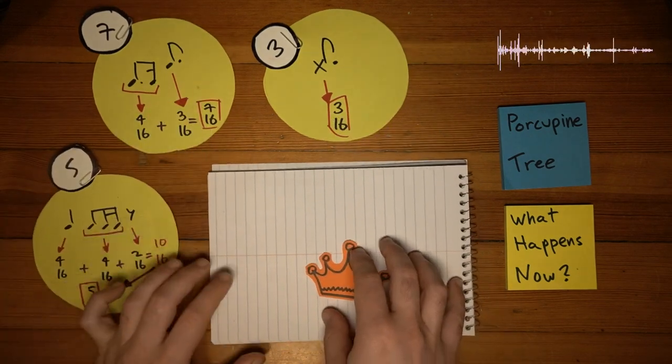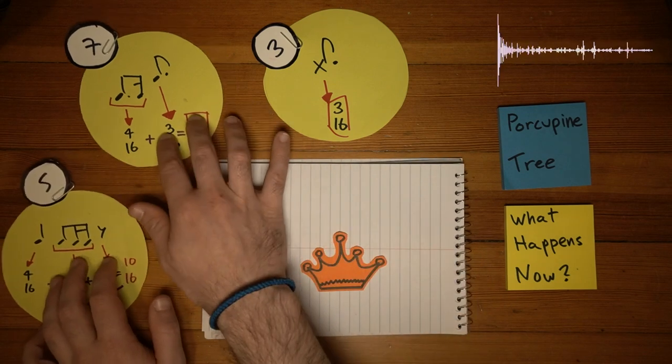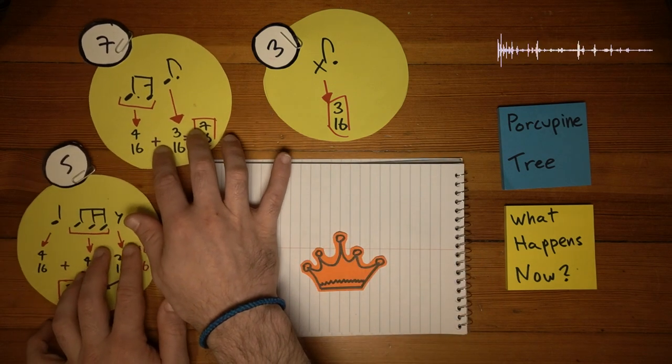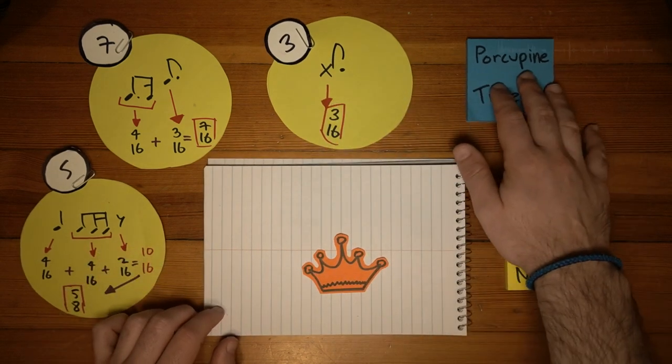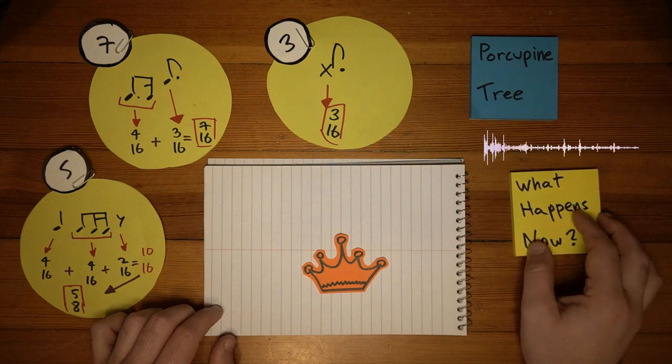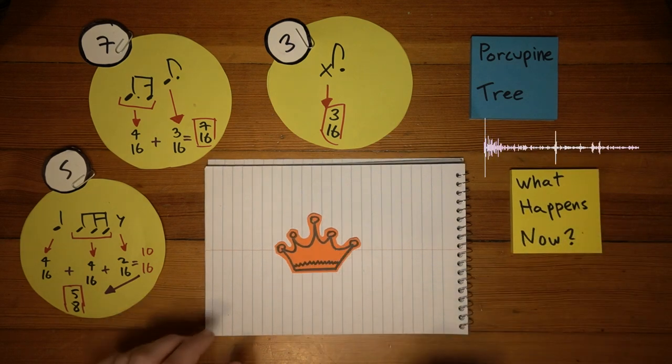And in the next sections, the 3 side gets more and more power, till eventually the whole band ditches the 7 and joins the 3 side. Which I would count as 6, but it's technically a 9. This makes the 3 the host. And this makes the section super cool.